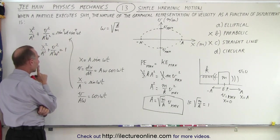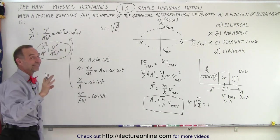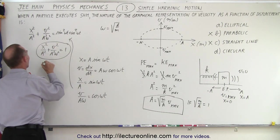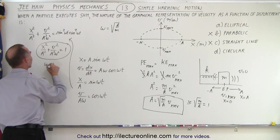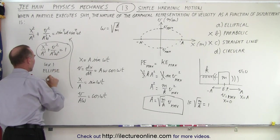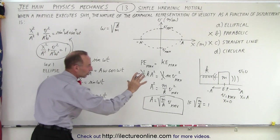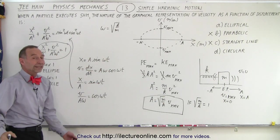Now notice that this here is an equation of an ellipse, unless omega is equal to 1. So when omega is not equal to 1 we have an ellipse. When omega equals 1 then we have a circle.